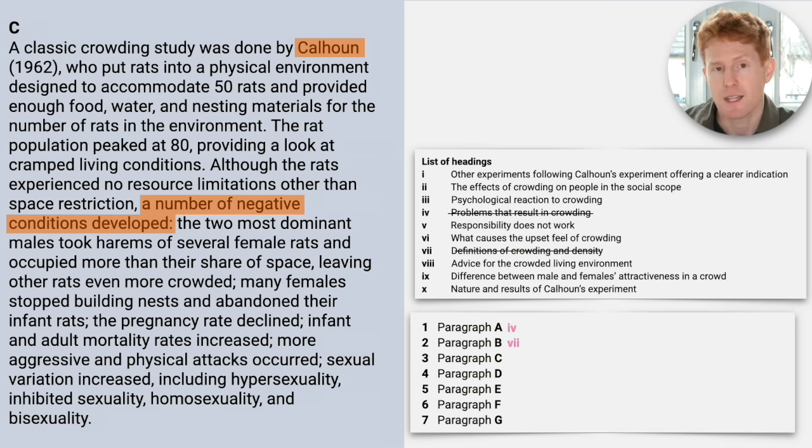The beginning shows that this paragraph outlines a study by Calhoun. The phrase, a number of negative conditions developed, shows us the results of the experiment. So a number of negative conditions developed is in the text, and then results of Calhoun's experiment is in the heading. So the answer is ten. So we're going to score that out and move on to paragraph D.